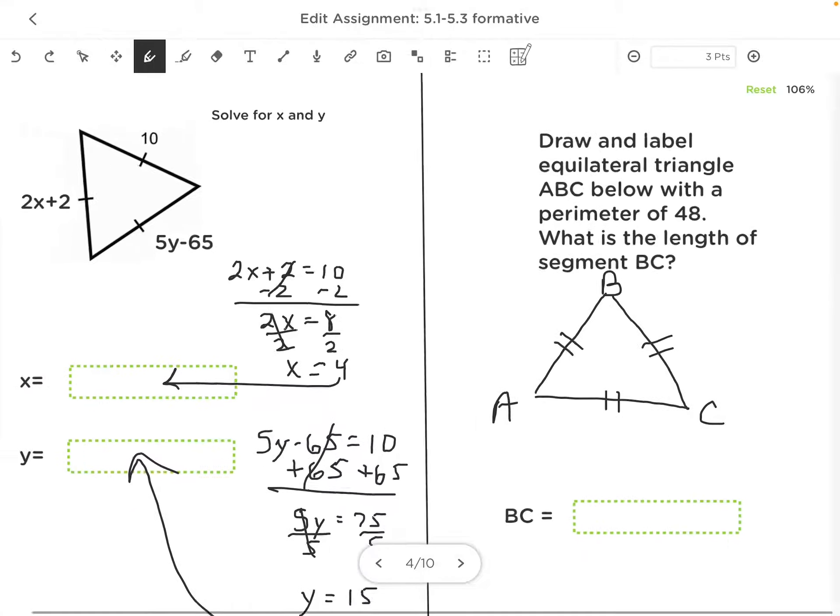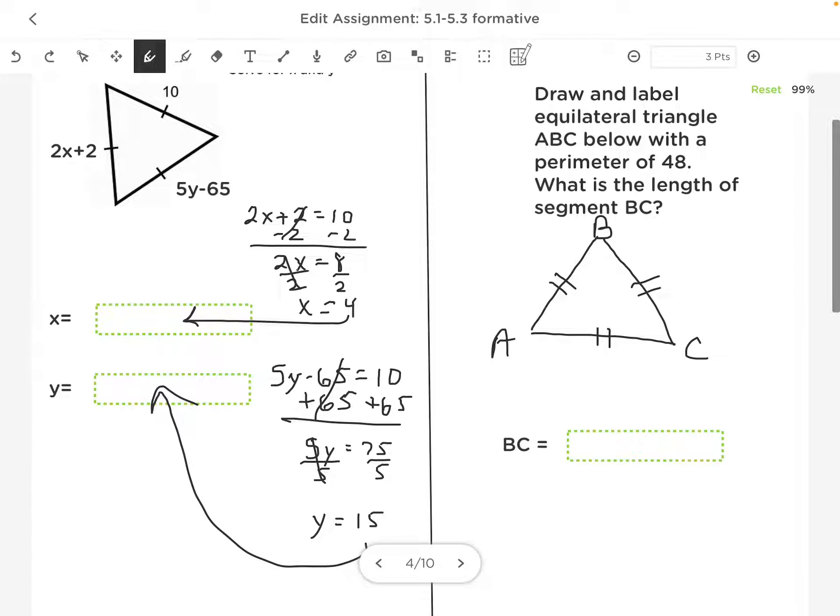Now it has a perimeter of 48, and we're trying to find the length of one of the sides, the length of BC. Well, if I know that all three sides add up to be 48, if I did 48 divided by 3, that means that each side has to be a length of 16. So BC is equal to 16.